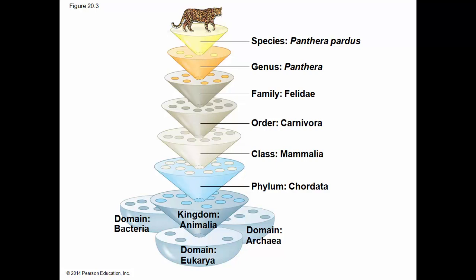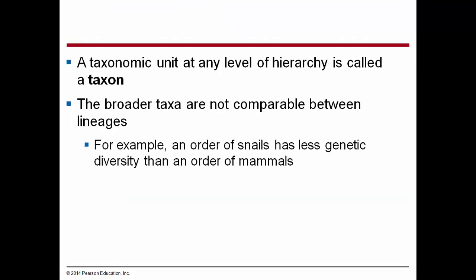A eukaryote is a cell or cellular organism that has a nuclear membrane or cellular membranes, as distinct from the prokaryotes, which include the bacteria and the archaea. A taxonomic unit at any level of hierarchy is called a taxon. A species is a certain taxon and a phylum is a certain taxon. The broader taxon are not comparable between lineages — for example, an order of snails has less genetic diversity than an order of mammals.